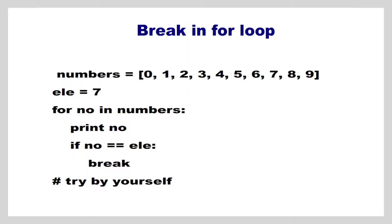Consider another example for break in a for loop, but this time using a list. We create a list called numbers whose items are 0 to 9, and another integer object whose value is 7. We have a for loop with an iterating variable that iterates over the list — we print the number, but if the number is equal to 7, we break. You will notice that all numbers are printed except 8 and 9, because the loop gets terminated when 7 is found in the list.